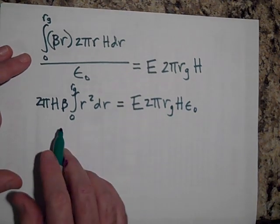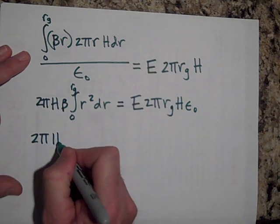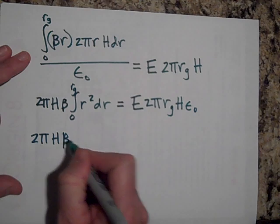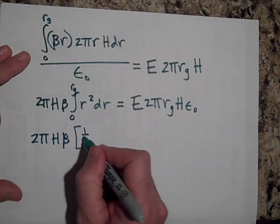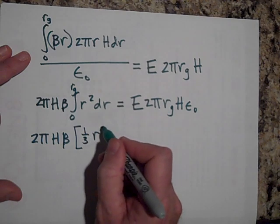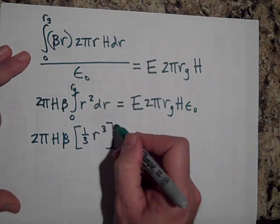Okay, let's take this integral then. That's going to be 2 pi H beta. And then the value of this integral is going to be one third R cubed from 0 to R_g.